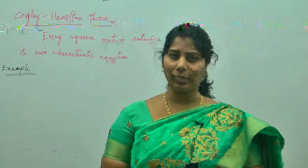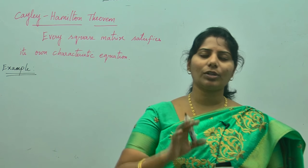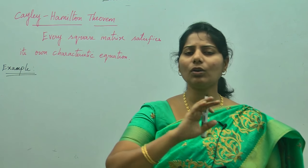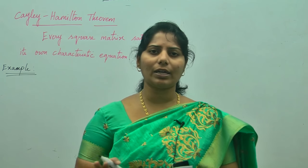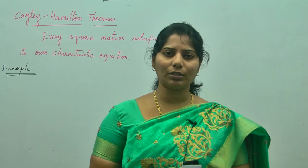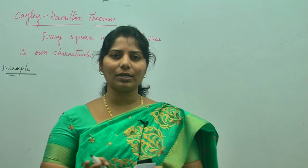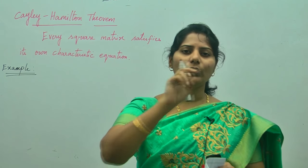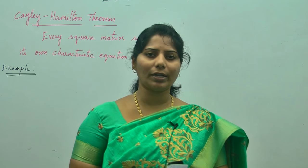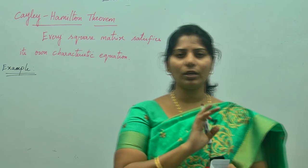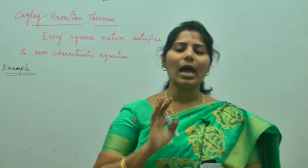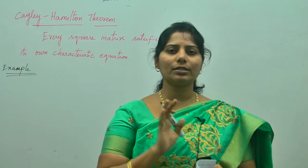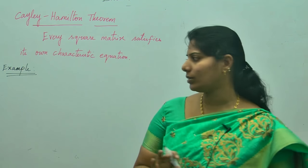First, you need to find the characteristic equation. After finding out the characteristic equation, you will replace lambda by A — wherever there is lambda, you will replace it by A. There is no need to find any eigenvalues or eigenvectors. The only thing you need to know is matrix multiplication. You have to be thorough with matrix multiplication: rows into columns. After finding the characteristic equation, straight away you can substitute.